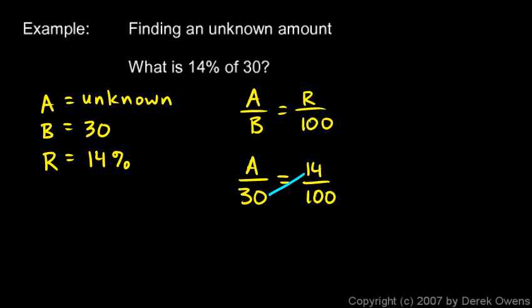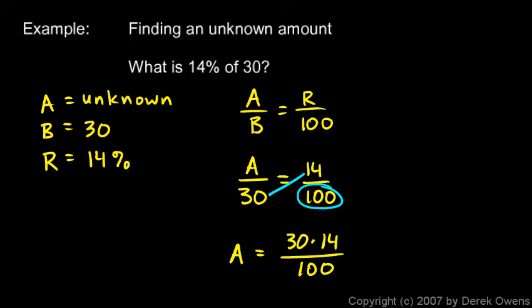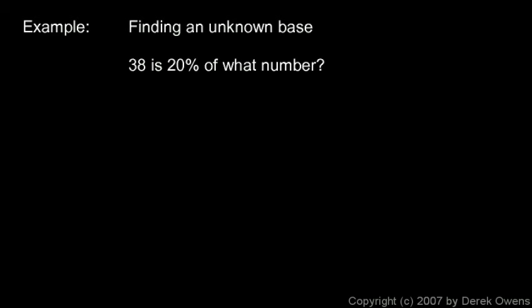Using the faster method for solving a proportion, a = (30 × 14) / 100. Canceling a zero gives 3 × 14 / 10 = 42/10 = 4.2. So 14% of 30 is 4.2.